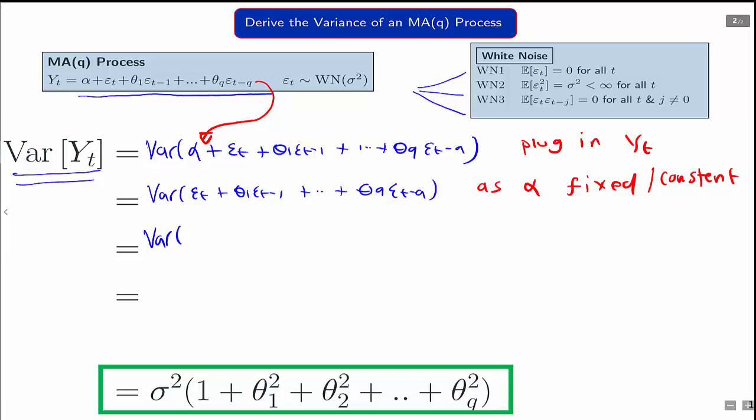Then, we can realize that because epsilon t is white noise, by white noise 3, all the error terms are uncorrelated with each other. And therefore, the variance of the sum of these Q terms is just the sum of all the variances added together.